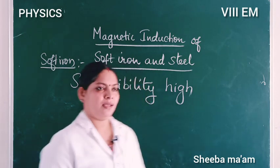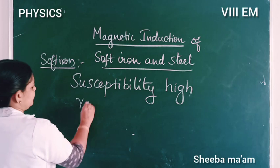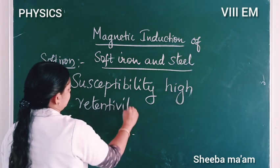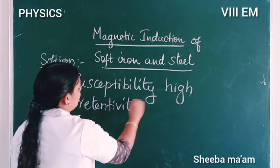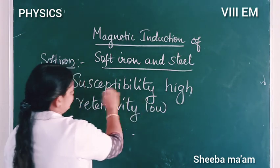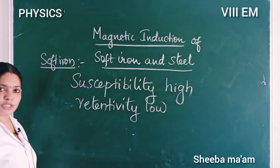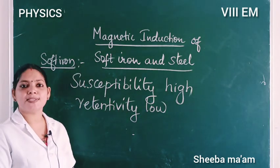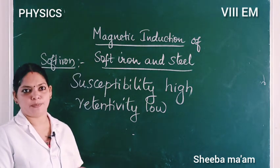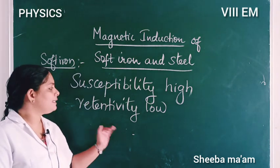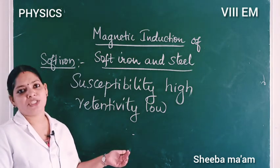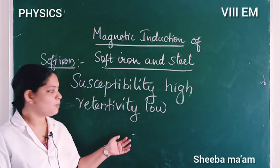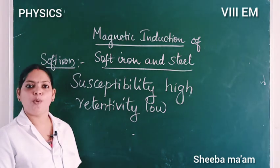Soft iron has low retentivity. It is easily subjected to magnetic induction. In the presence of a magnet it becomes a strong magnet, but it has low retentivity.